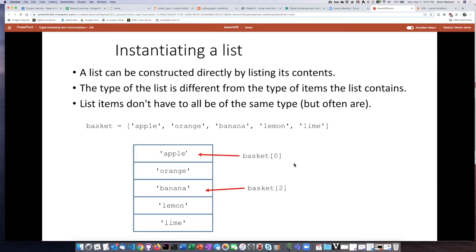If we want to create a list, we can do it directly by simply stating all of the items that are in the list. So for example, if I want to create this basket list, I can put square brackets and then list each of the items that are on the list separated by commas. So in the case when the items are strings, each of the items need to be in single quotes. If it were a list of numbers, I would not put quotation marks in there.